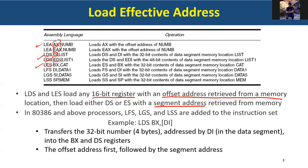For newer x86 architectures like the 80386 and forward through Intel Pentium processors, there are also LFS, LGS, and LSS instructions. These perform the same operation but for longer addresses, like an address that takes four bytes. For example, 'LDS BX, [DI]' will load the four-byte address at that memory location — the offset goes into BX and the segment address goes into DS.